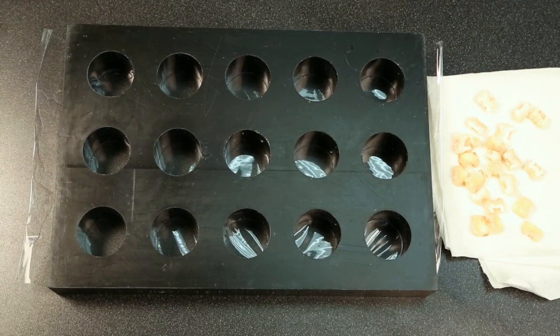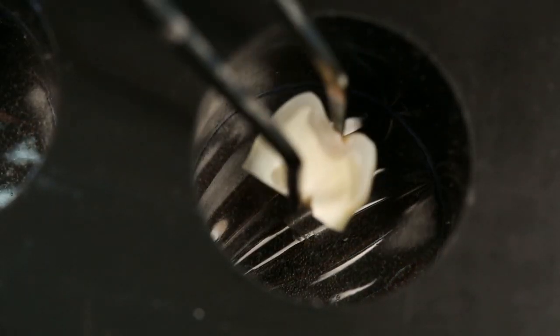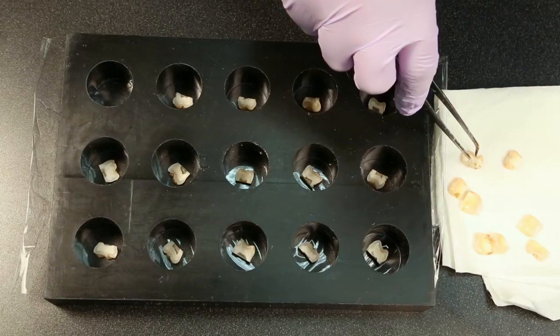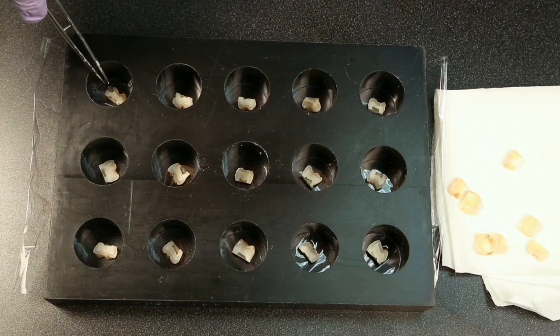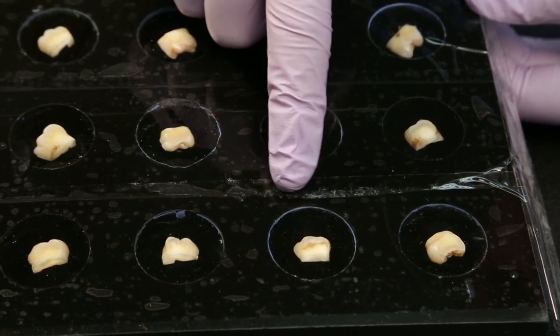Blot dry section teeth before placing in the mold to ensure good adhesion with the teeth and tape. Place a tooth in the center of each hole, pressing the tooth into the tape. Turn the mold over to check placement and ensure the teeth are stuck securely to the tape.